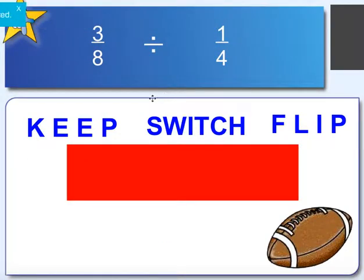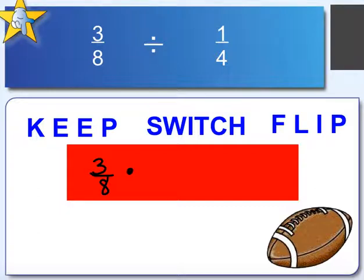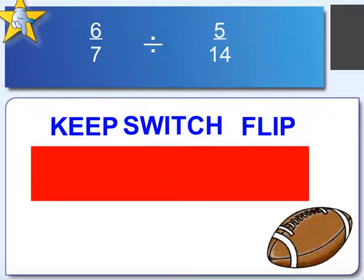Let's practice this keep, change, flip — also called copy, dot, flip. Practicing with 3 eighths divided by 1 fourth: we keep 3 eighths, switch the sign to multiplication, and flip to get 4 over 1. We can reduce: 4 becomes 1 and 8 becomes 2. So 3 times 1 is 3 and 2 times 1 is 2, giving us 3 over 2. We can keep it as an improper fraction — that is fine at this stage.